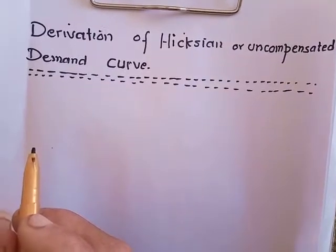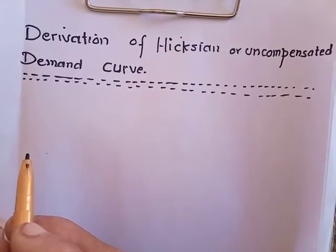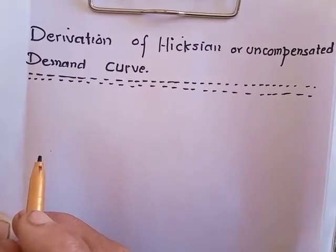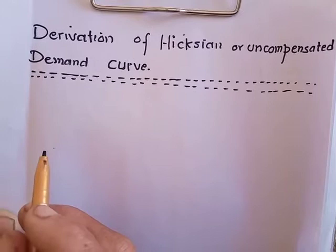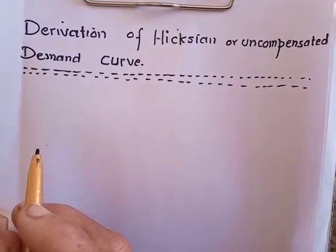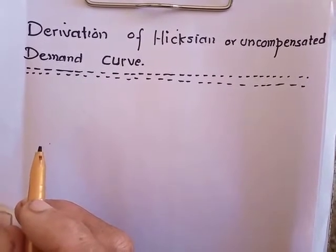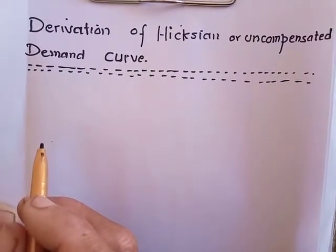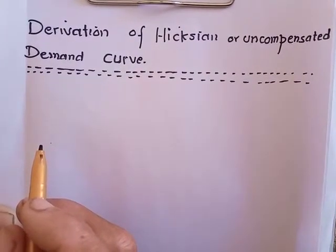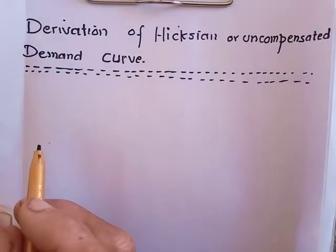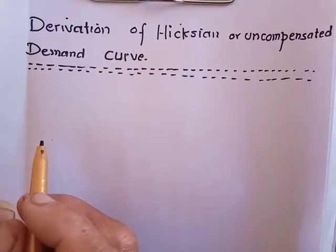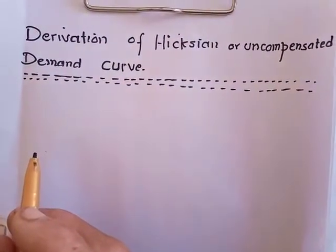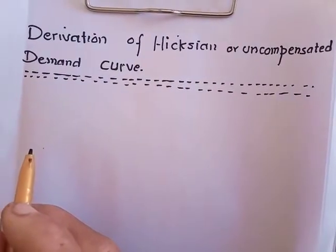Today we will be deriving the Hicksian or uncompensated demand curve. The uncompensated demand curve is different from the compensated or Marshallian demand curve. The Marshallian demand curve is a function of prices of commodities or services and income, where income is constant. In the Hicksian demand curve, quantity demanded is a function of prices and utility, where utility is constant — utility along one indifference curve remains the same. So this is the reverse of the Marshallian demand curve.